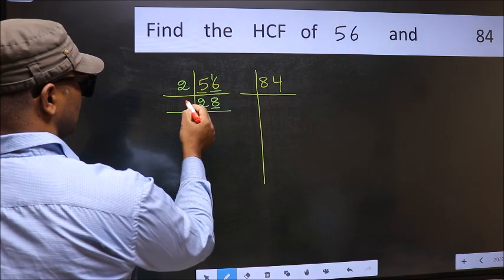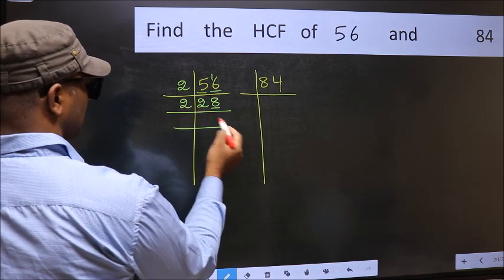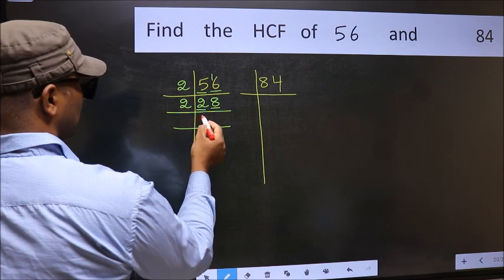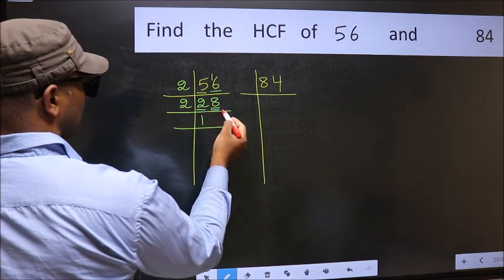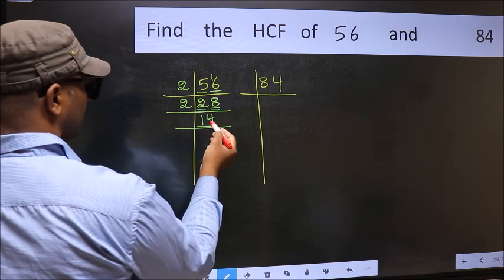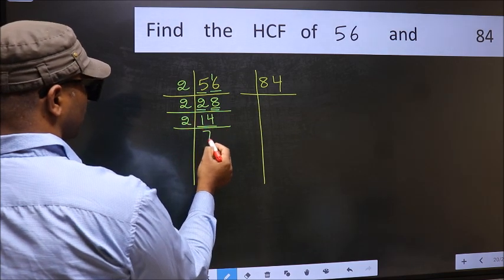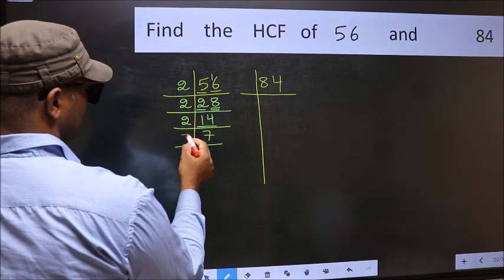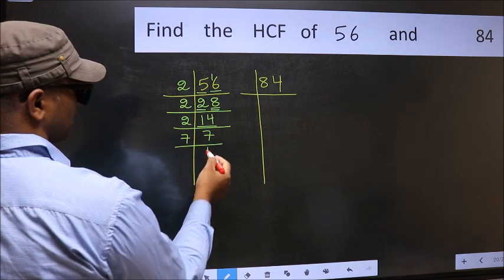Now last digit 8, even, so take 2. First number 2, when do we get 2 in 2 table? 2 times 1 is 2. The other number 8, 2 times 4 is 8. Now 14 is 2 times 7. 7 is the prime number, so 7 times 1 is 7.